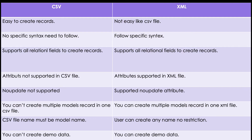In the CSV side, relational model records are supported. For example, if a record has a relational field — many-to-one, one-to-many, or many-to-many — you can easily define it using the module name followed by a dot and then the ID of that record. On the XML side, all three relational fields are also supported; the only difference is the syntax, as XML requires a more specific format.